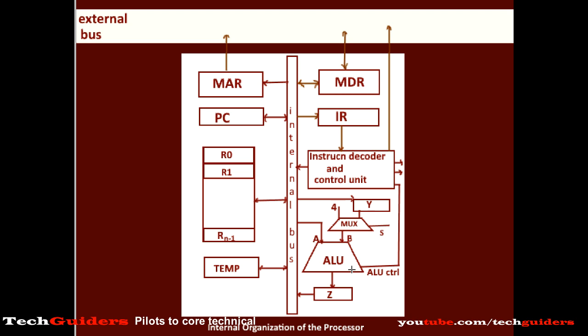We can call this an instruction cycle — usually a fetch, decode, execute cycle — which the processor follows from boot-up till shutdown in order to process the instructions of the corresponding program. We have seen that these individual phases — fetch, decode, and execute — of an instruction cycle actually involve a set of micro-operations.